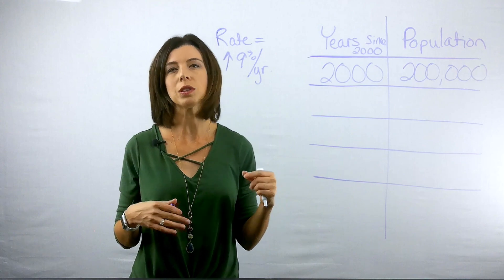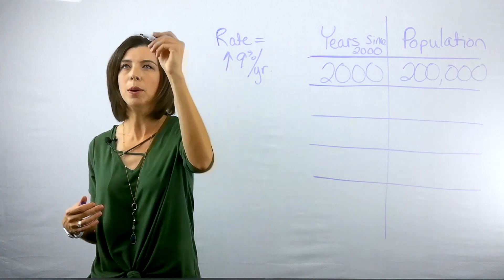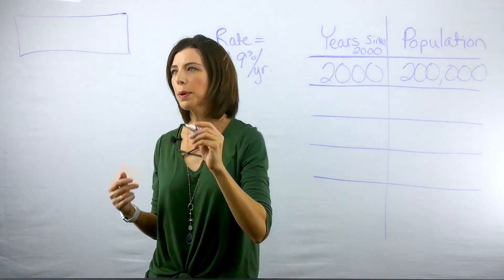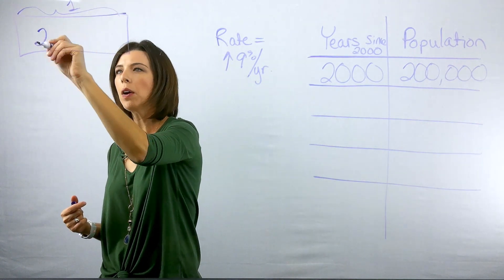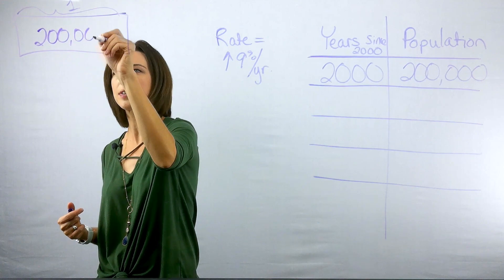Now if we think back to like a tape diagram, we might draw something like this. And this represents my whole or one. And my whole is 200,000 people.